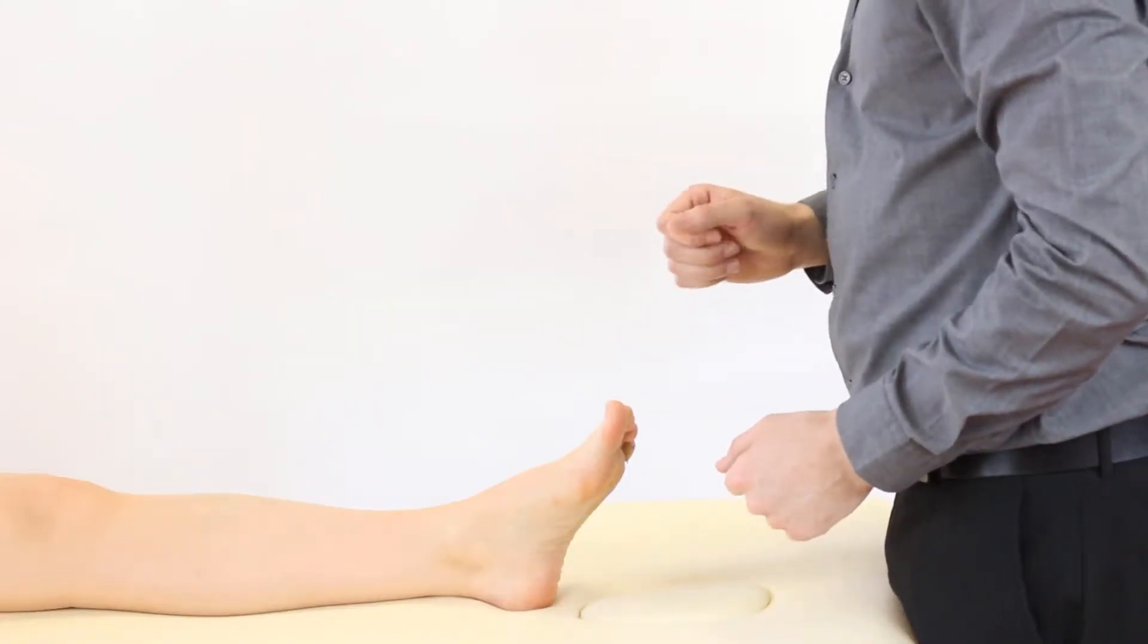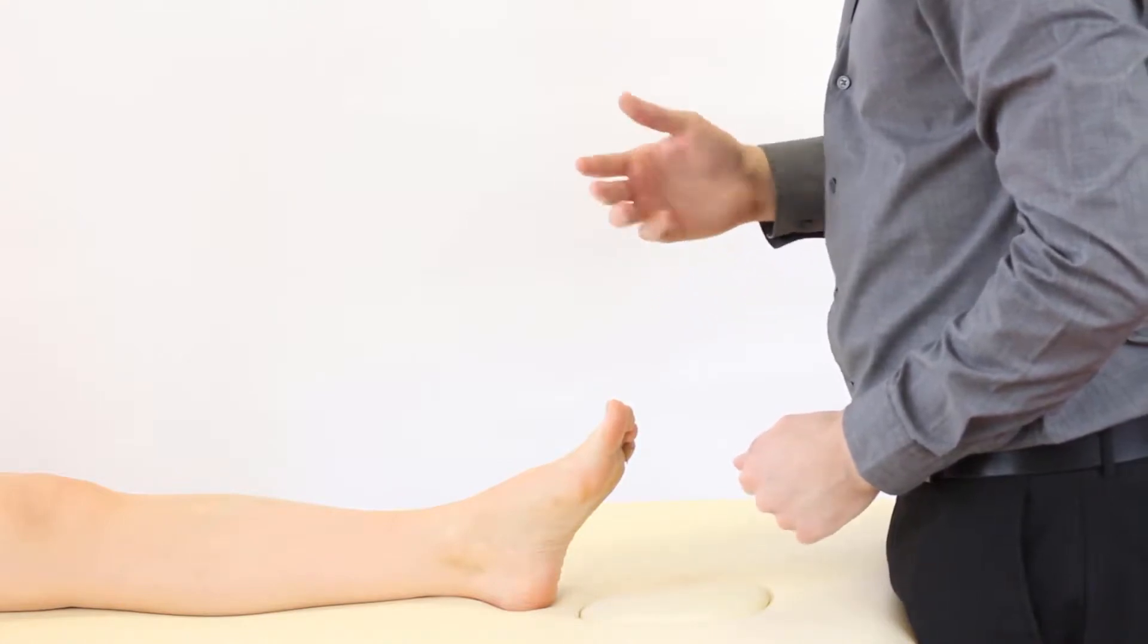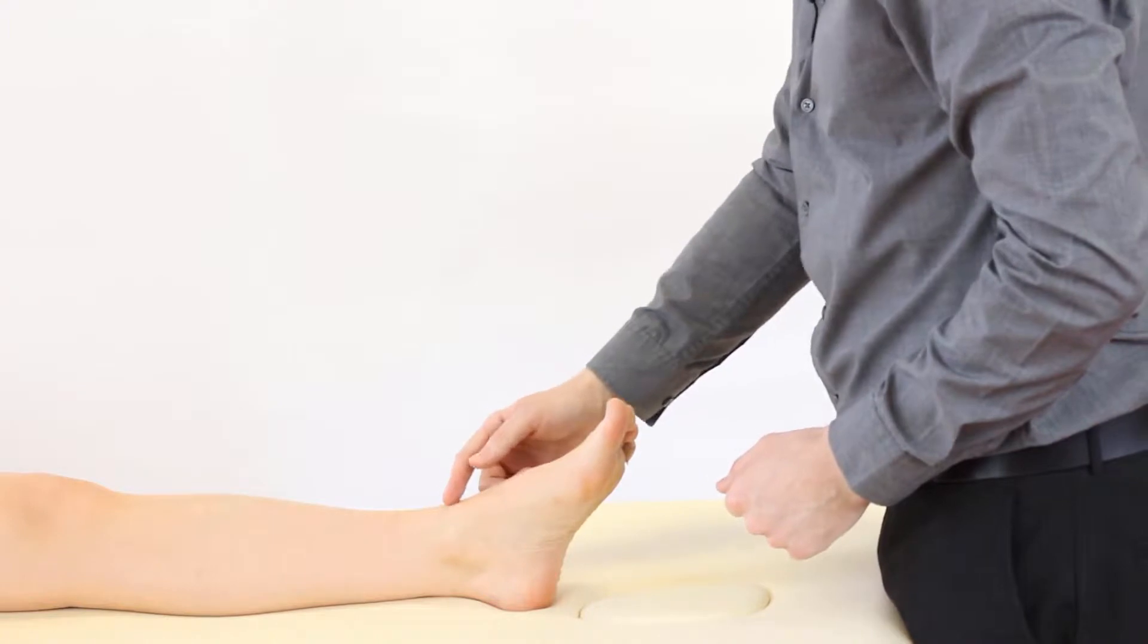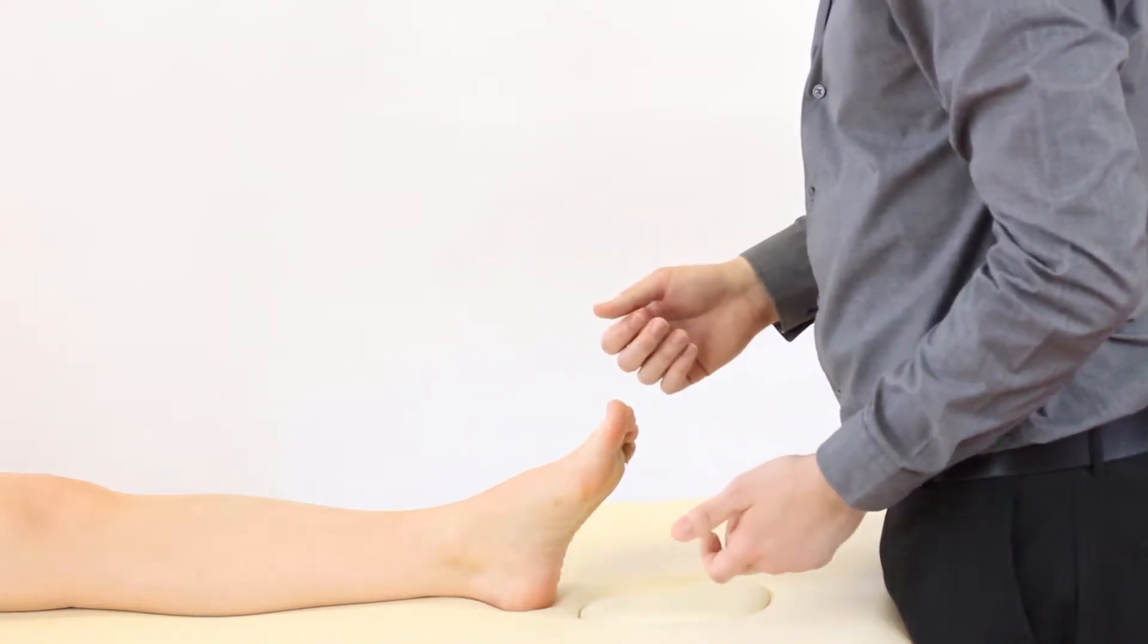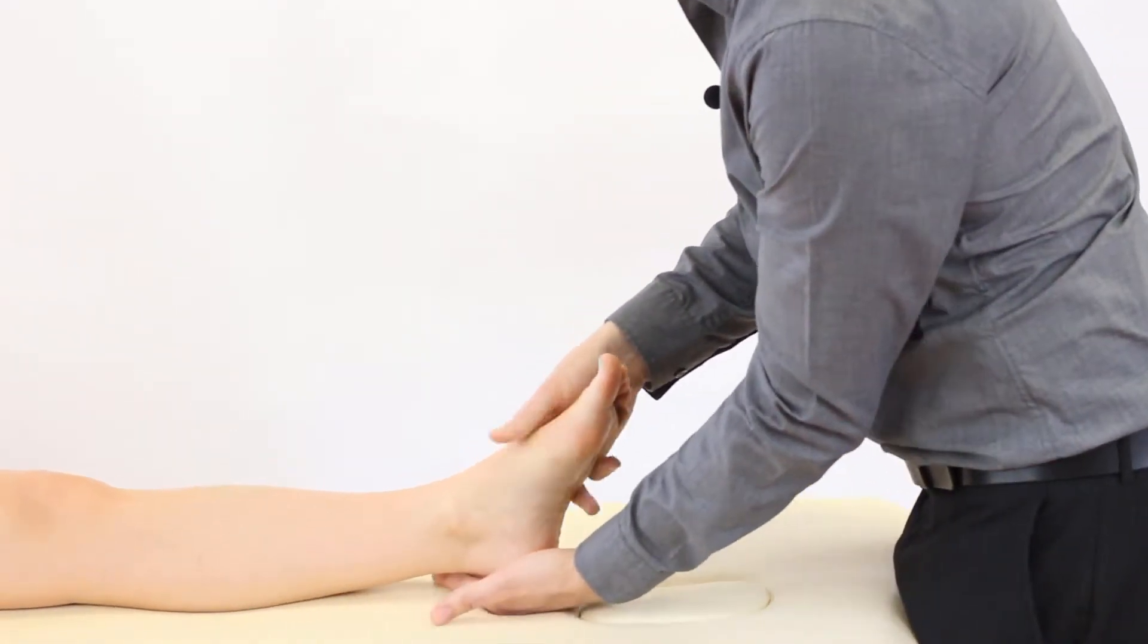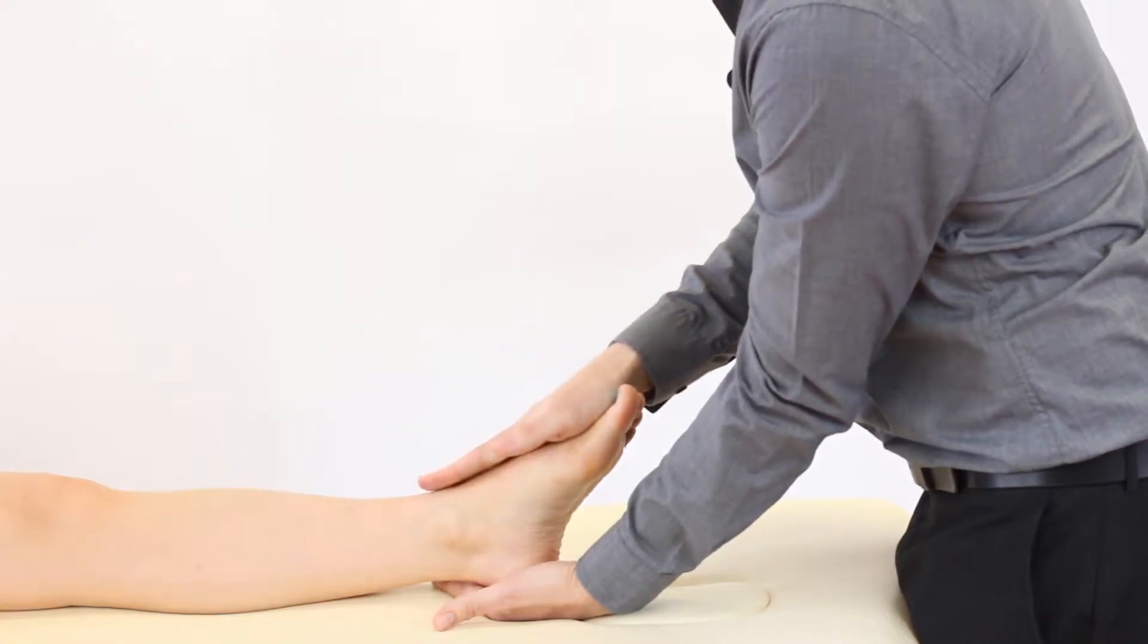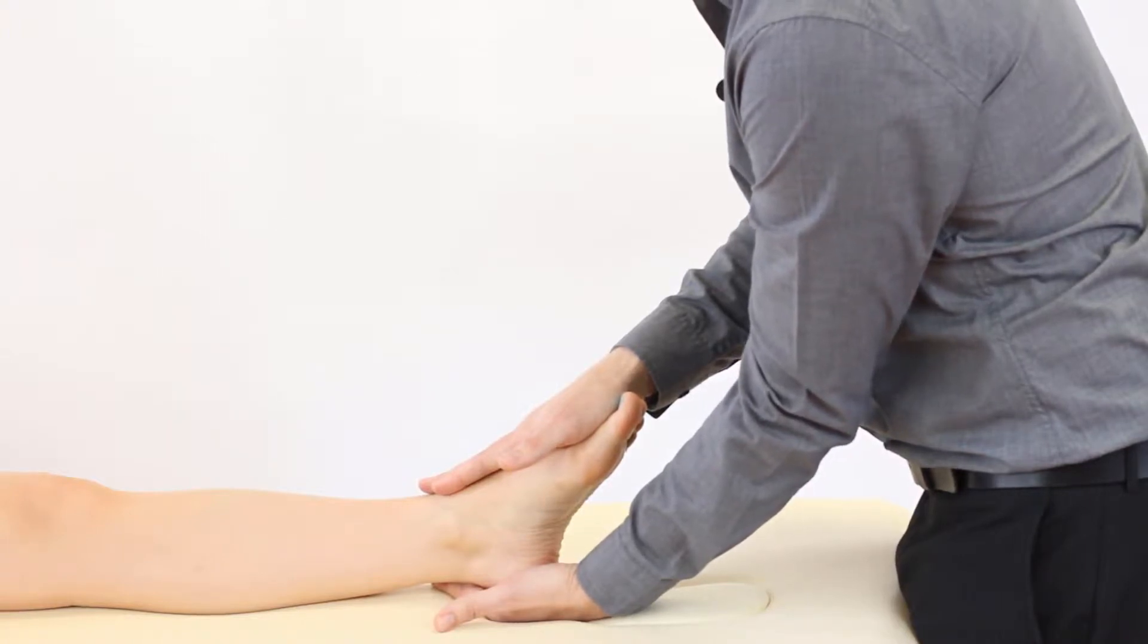Now we're going to look at passive range of motion of the ankle in plantar flexion which occurs at the talocrural joint, the articulation of the talus and the tibia-fibular complex. As a therapist we're going to stand at the end of the bed. I'm going to cup the heel, the calcaneus, with one hand and use the flat of the other hand and place it on the dorsum of the foot. The patient is going to be supine or long sitting.